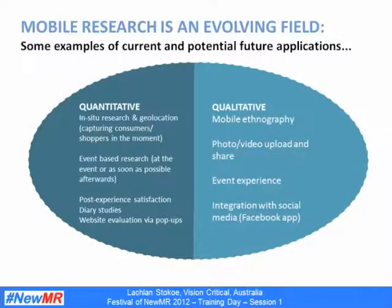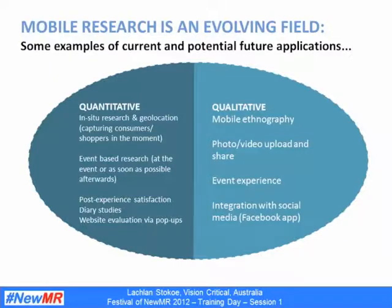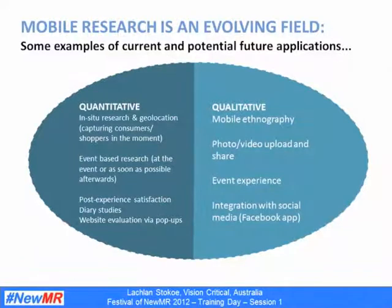We also need to understand that mobile research is still an evolving field, and its full potential has not yet been unlocked by researchers. Some examples of where it's currently being used are shown in this chart. However, things like geolocation and mobile derivatives are skills that haven't been fully developed yet. I'm a quanti, so I don't have too much direct experience with the qualitative approaches shown here, but what I think we will see over time is a continued blurring of the traditional quant-qual divide.